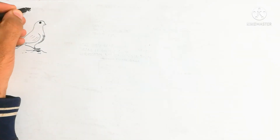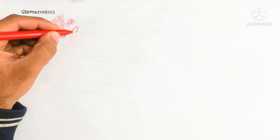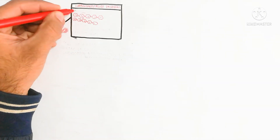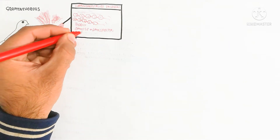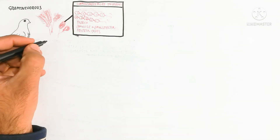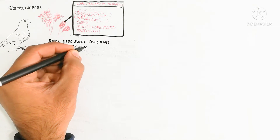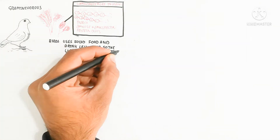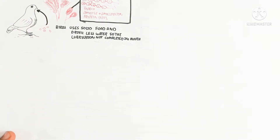In this video we will discuss the digestive system of the bird, focusing on the pigeon. Birds consume carbohydrates mainly in the form of grains, with small amounts of protein and fat. Birds use solid food and drink less water, so lubrication in the mouth is not complete. The excretory product is uric acid, which is why birds are known as uricotelic animals.